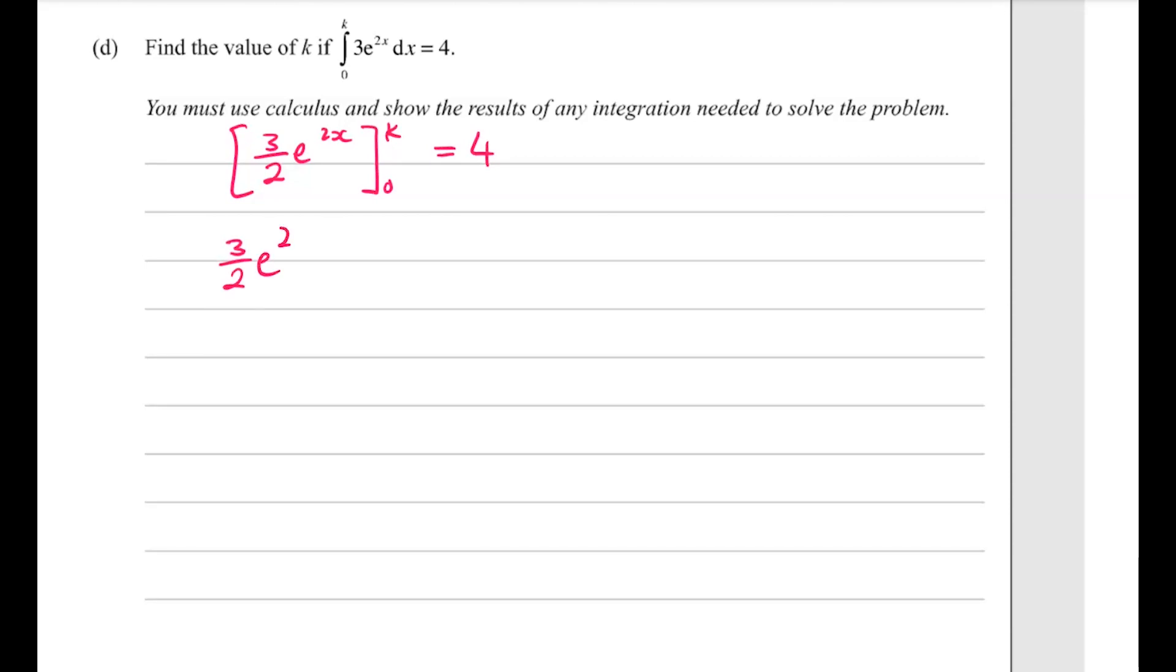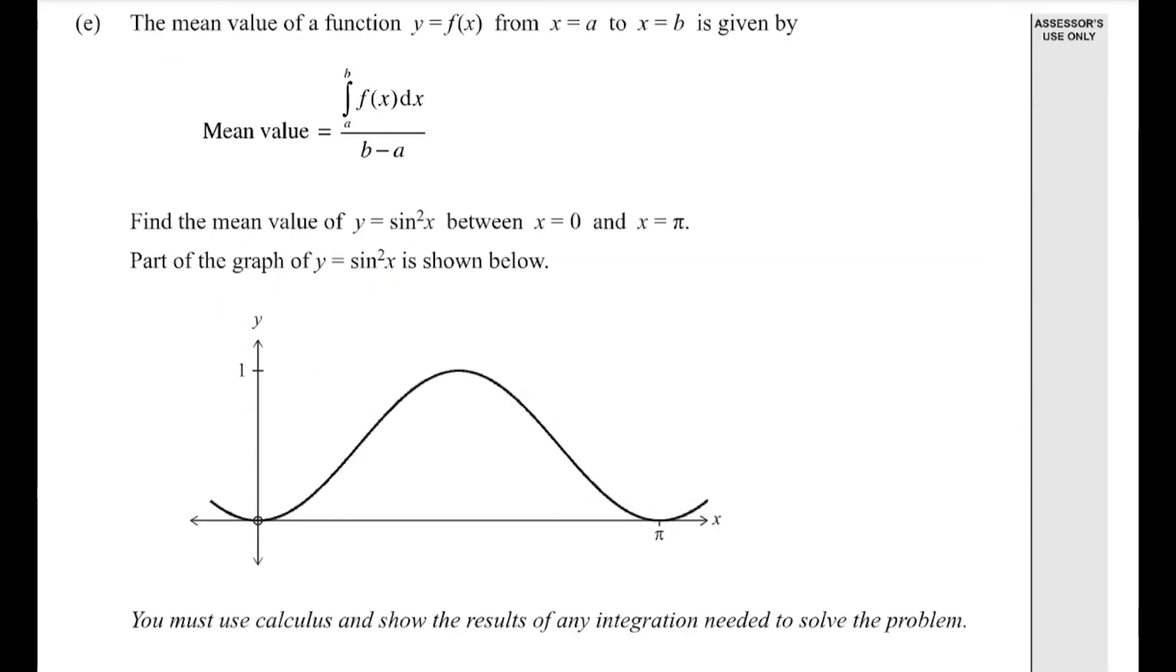So we get 3 over 2 e to the 2k minus 3 over 2 e to the 0 is equal to 4, where e to the 0 is going to be 1. We can take out a factor of 3 over 2, e to the 2k minus 1 is going to be 4. And we're just going to carry that on now.